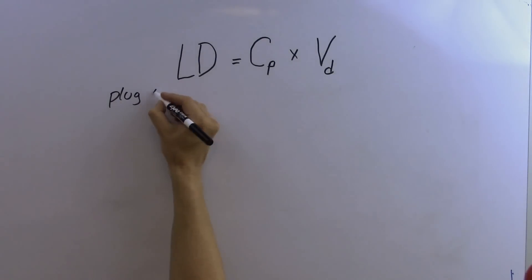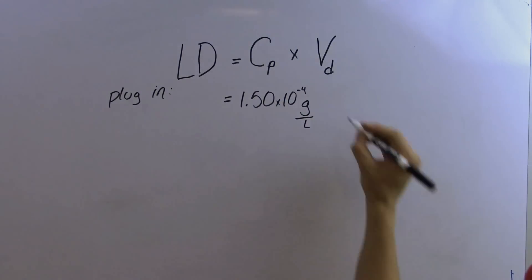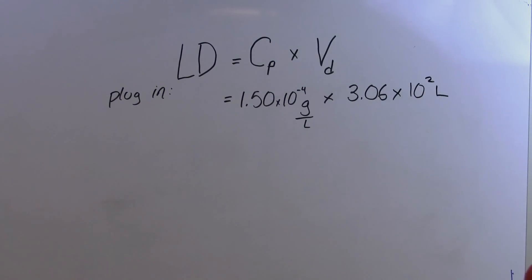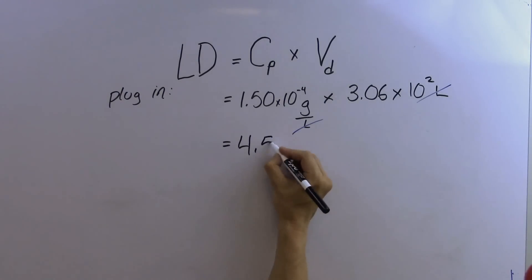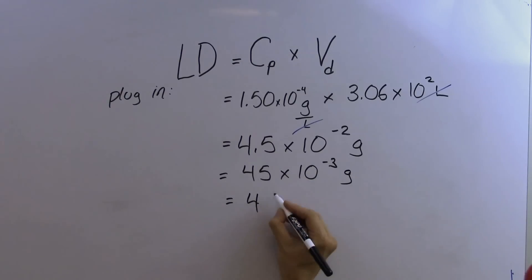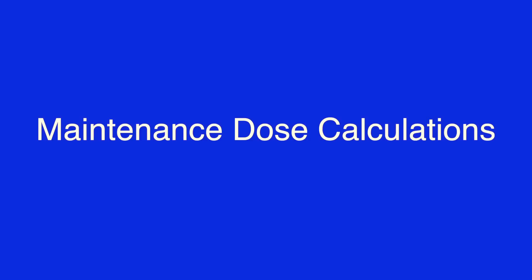Now we plug into our formula: CP is 1.5 × 10⁻⁴ grams per liter and VD is 3.06 × 10² liters. Cancelling units, we end up with 4.5 × 10⁻² grams, or 45 × 10⁻³ grams, which equals 45 milligrams. So our loading dose is 45 milligrams.